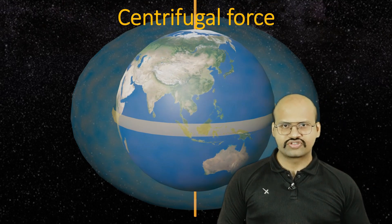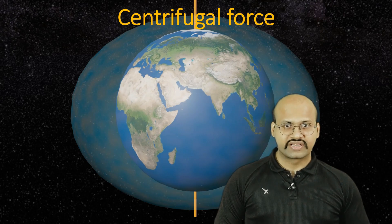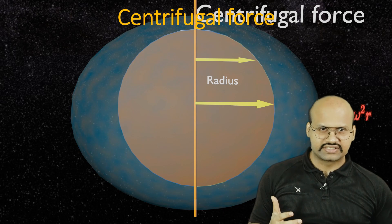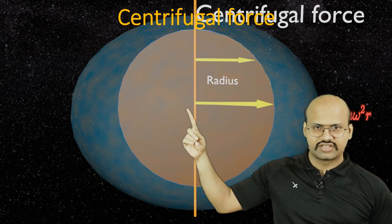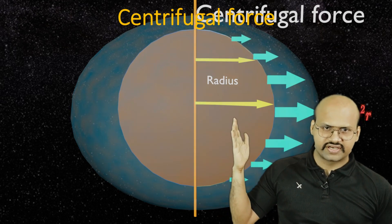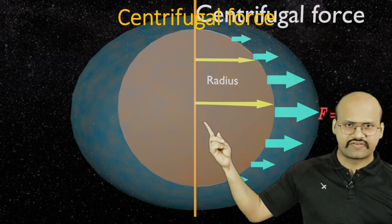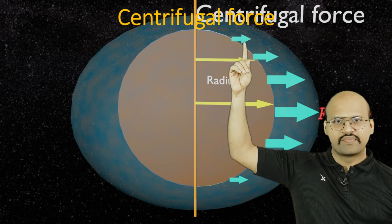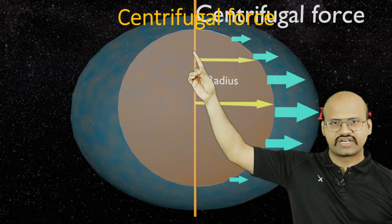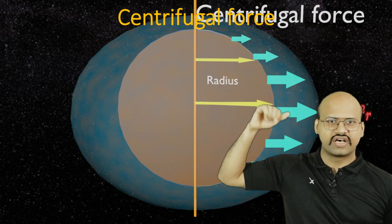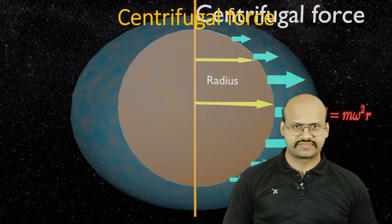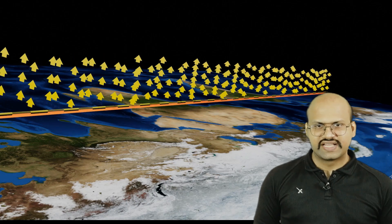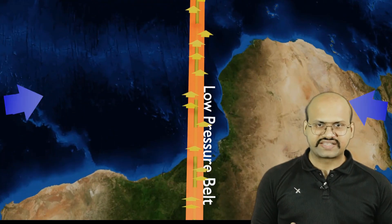Centrifugal force also helps in this process. Centrifugal force acts in a direction perpendicular to the rotation axis and depends on the distance from this rotation axis. At the equator, the distance is maximum, therefore the centrifugal force is maximum here. In the polar regions the distance from the axis is less, so centrifugal force is less. Because of this equatorial heating and centrifugal force, the air at the equator rises up.